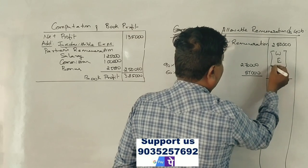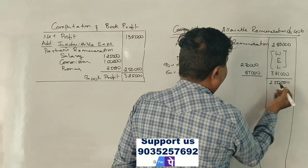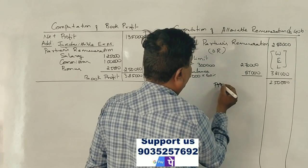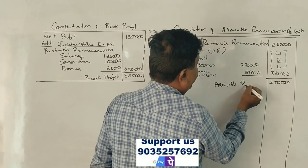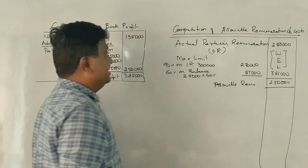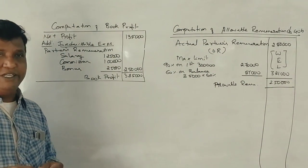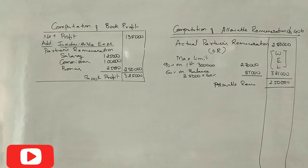Actual remuneration ₹2,50,000 is less than the maximum limit ₹3,21,000. Therefore, allowable remuneration is ₹2,50,000. This question carries 6 marks.